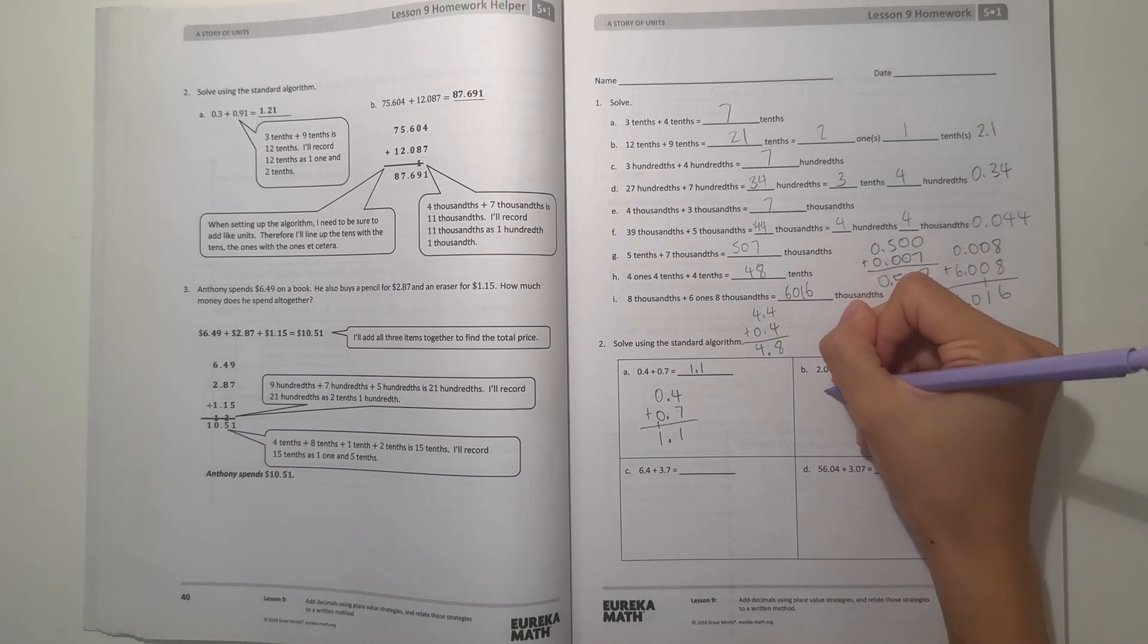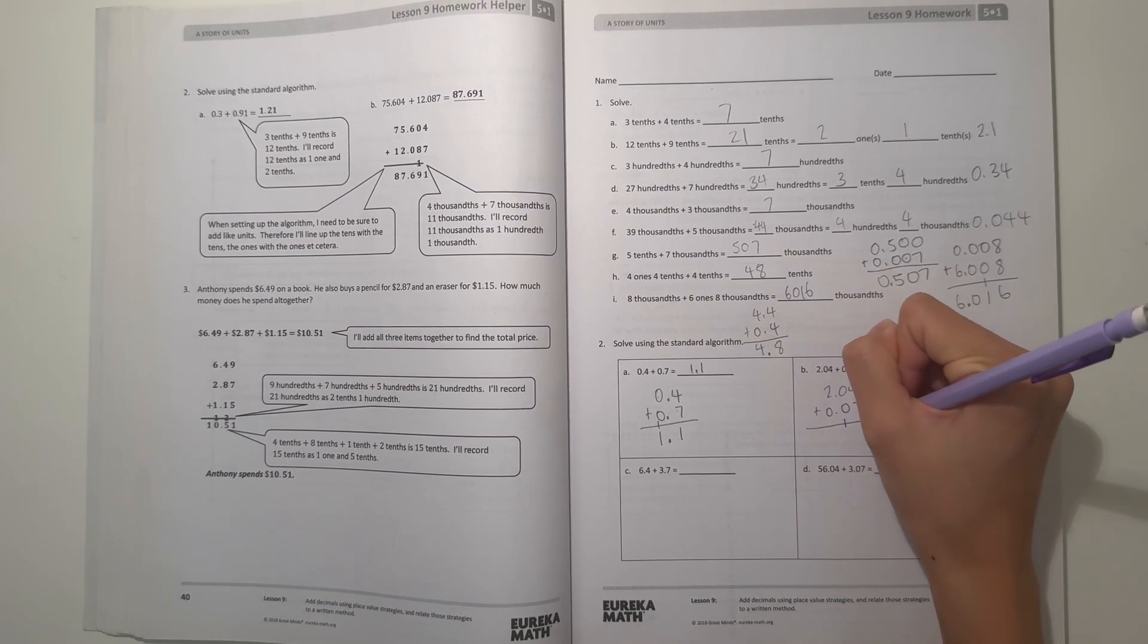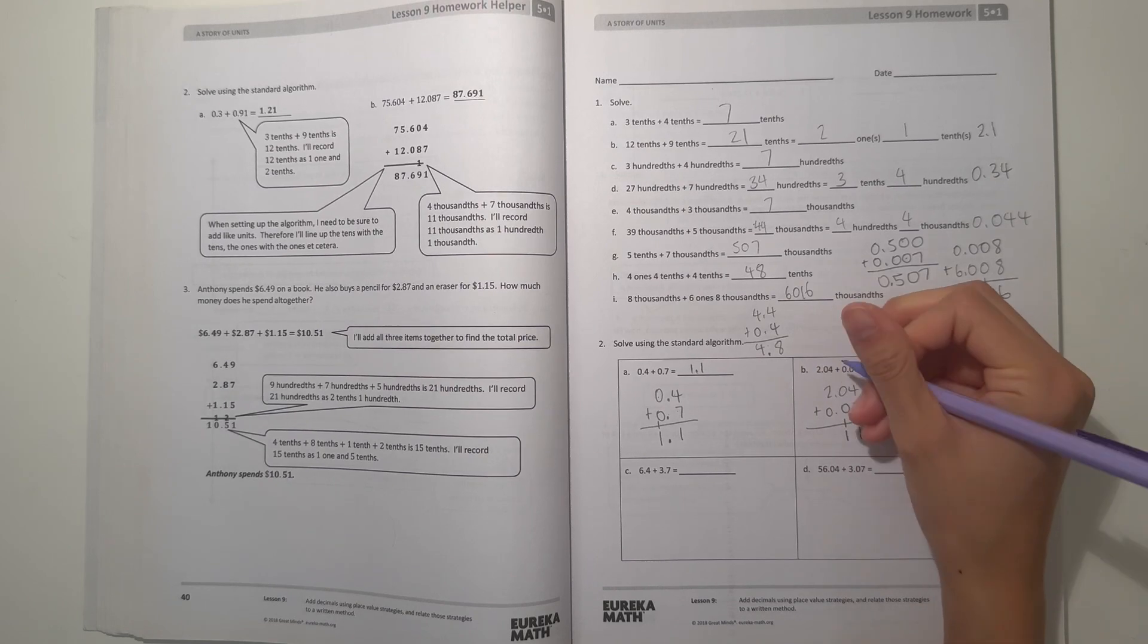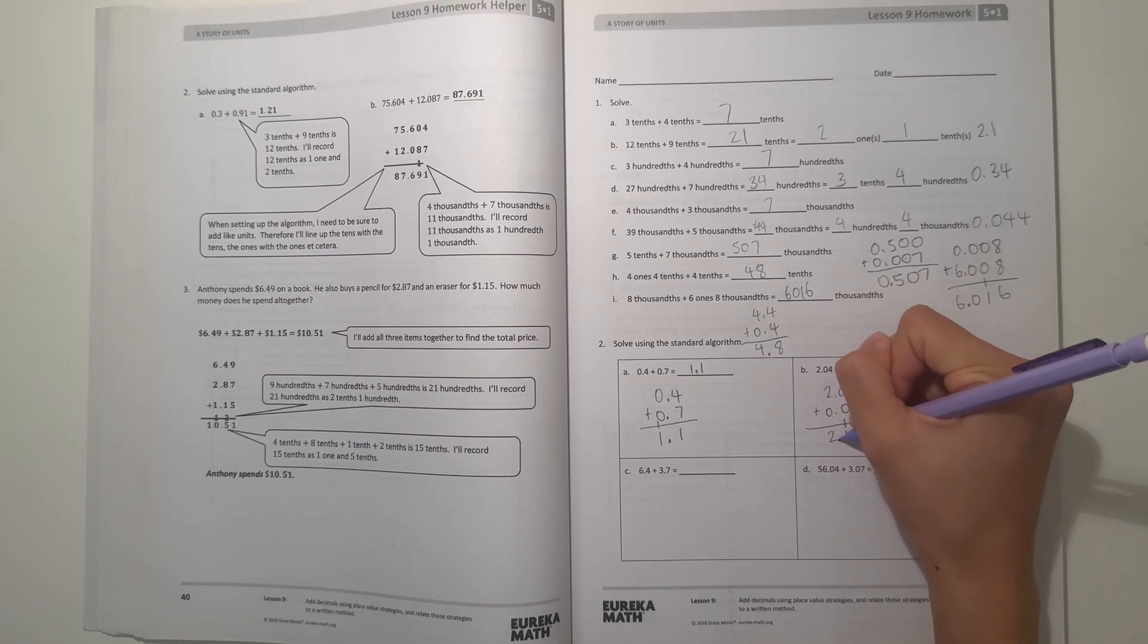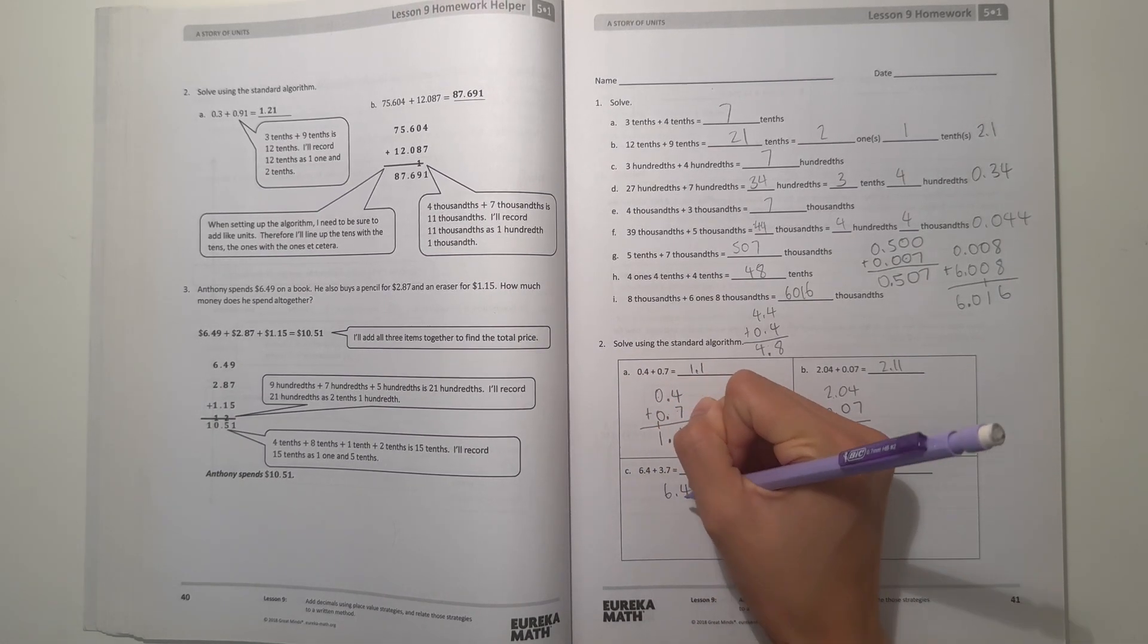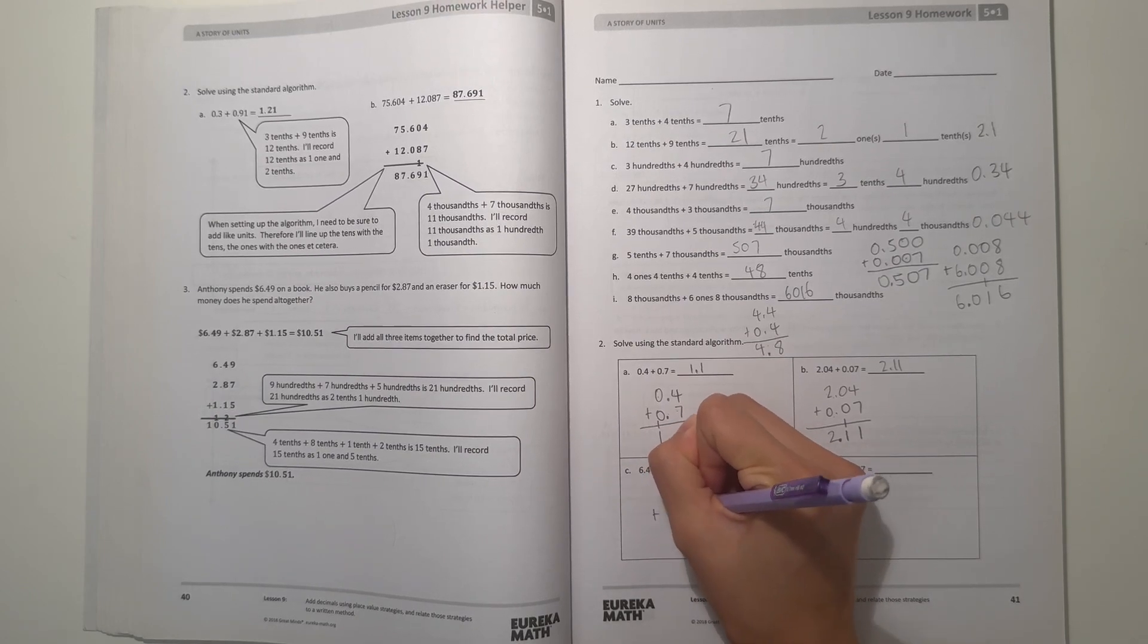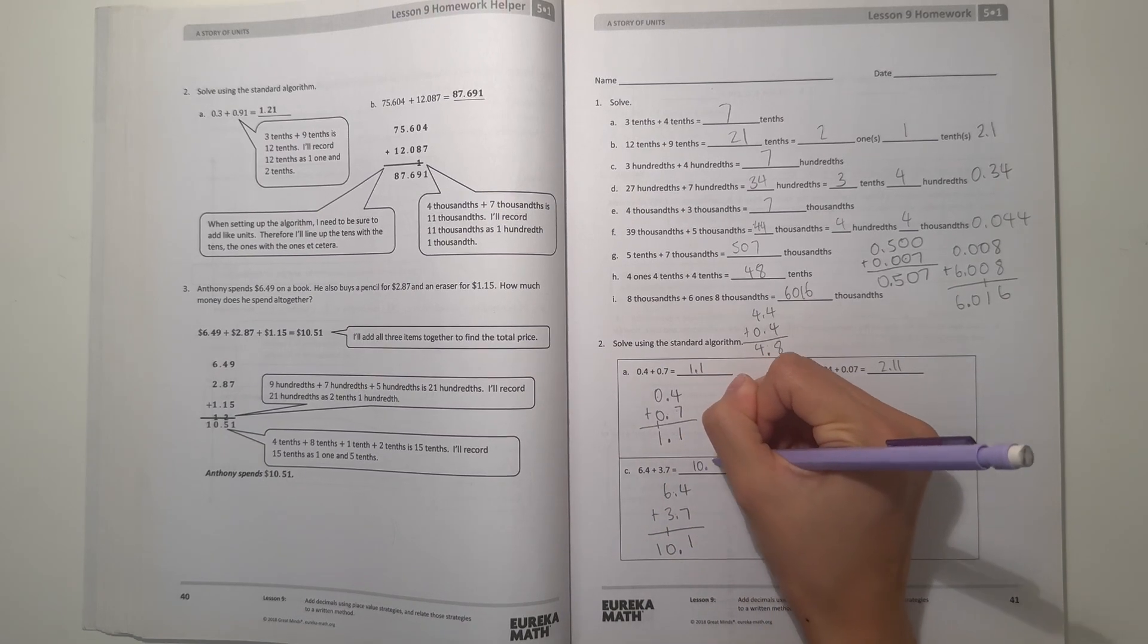And B, we have 2.04 plus 0.07. 4 plus 7 is 11, 0 plus 1 is 1, and 2 plus 0 is 2. And don't forget to carry the decimal point down. So our answer is 2.11. Alright, and C, we have 6.4 plus 3.7. 4 plus 7 is 11. And 6 plus 3 is 9 plus 1 is 10. And don't forget to carry the decimal point down. So our answer is 10.1.